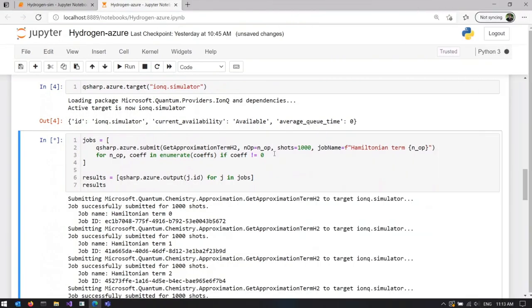We evaluate each term separately and then combine them together using classical post-processing. Another interesting thing here is this parameter shots. Quantum algorithms are very often probabilistic, non-deterministic. So if you run it once and you do a measurement in the end, there is non-zero probability that you are not going to get the result you're looking for. So what we do in this case, we run the algorithm multiple times. Each run is called a shot. And we collect statistics based on those multiple runs.